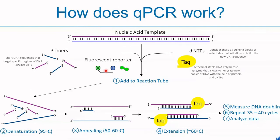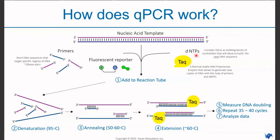The fluorescent reporter can be a DNA binding dye such as SYBR Green, or a fluorescently labeled QPCR probe or primer that emits fluorescence signal. dNTPs, also known as deoxyribonucleotide triphosphate, are the building blocks of the nucleotide that allow building of new DNA sequences. Taq polymerase is a thermostable DNA polymerase enzyme that generates new copies of DNA with the help of primers and dNTPs. All these materials are factors in QPCR optimization, but today we will only focus on nucleic acid template and primer design.